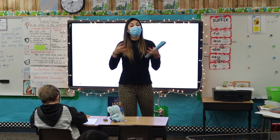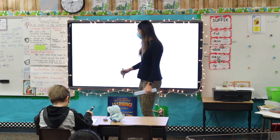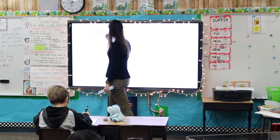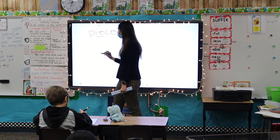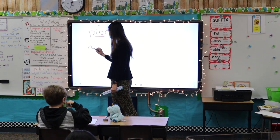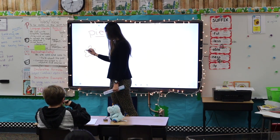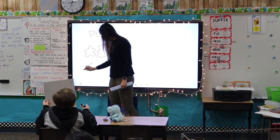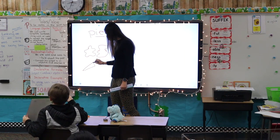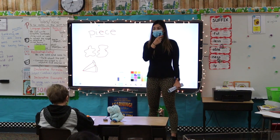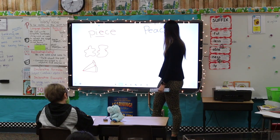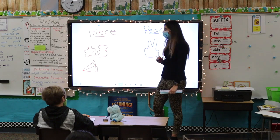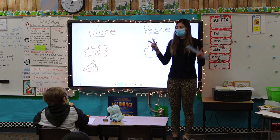What did you draw? A puzzle. A puzzle — peace. Exactly. So for peace, there's peace with the I, and this is a puzzle piece. A terrible puzzle piece. But there's a piece, or you might think of, can I have a piece of pie? And we said another peace — we come in peace.